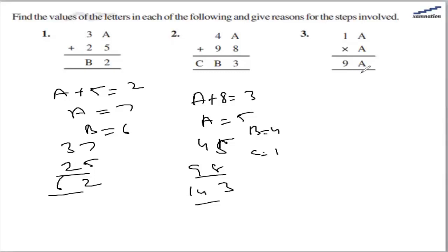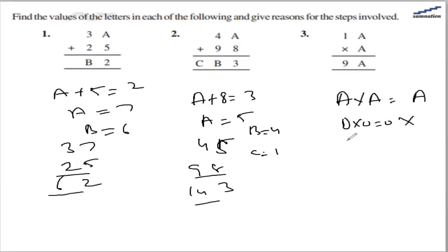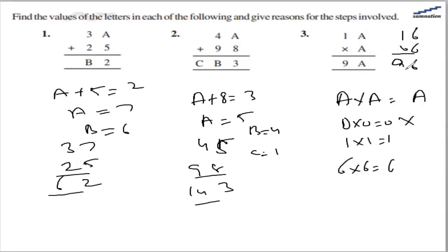The third one is 1a multiplied by a, giving 9a. So a multiplied by a gives a. That is possible if a is 0, but then the whole thing becomes 0, so that is not possible. If a is 1, then 11 multiplied by 1 gives 11, which is also not possible. But if a is 6, then 16 multiplied by 6 gives 96. So a will be 6.